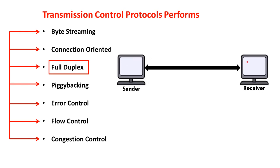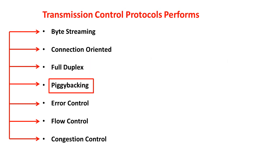TCP supports full duplex communication because both the sender and receiver end can send data at the same time once the connection is established. Piggybacking is another important process of TCP. After receiving the packets, the receiver sends an acknowledgement. Instead of sending an acknowledgement for each and every packet, the receiver can send a single acknowledgement for a group of received packets. The receiver waits until its network layer passes the next data packet, and the delayed acknowledgement is then attached to this outgoing data packet.